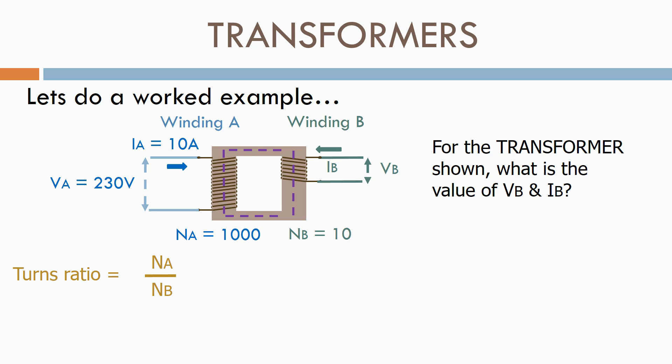From the previous slide, transformer turns ratio equals NA over NB. From above, this equals 1000, which is NA, divided by 10, which is NB. This equals 100.